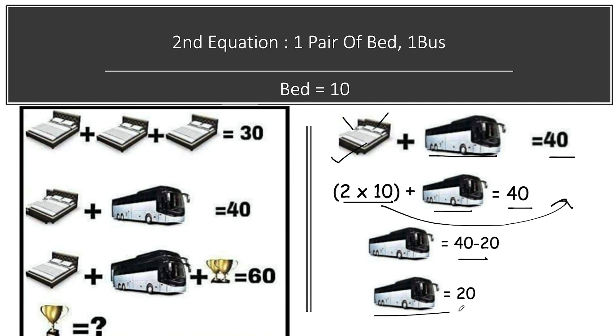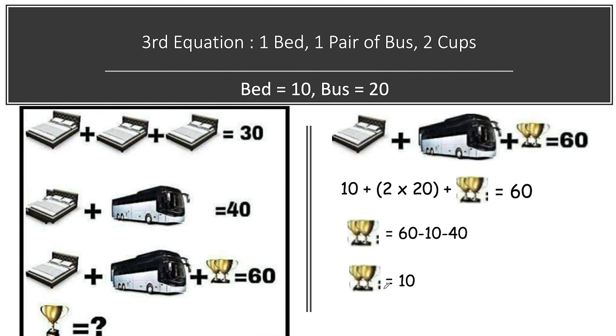Now moving on to a third equation. In the third equation you can see one bed is present here and there are two buses, one bus is at the front and one bus is at the behind, and we have two cups here. Total value is equal to 60.